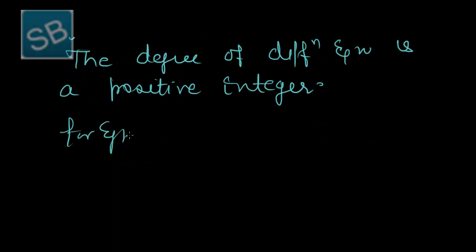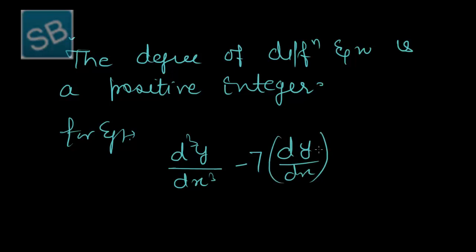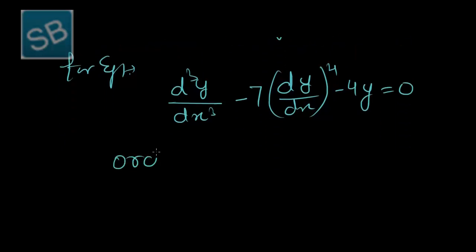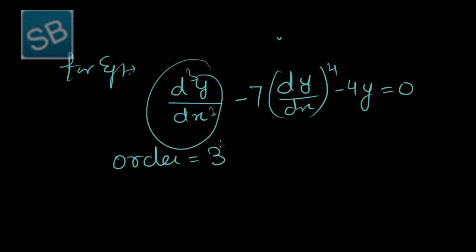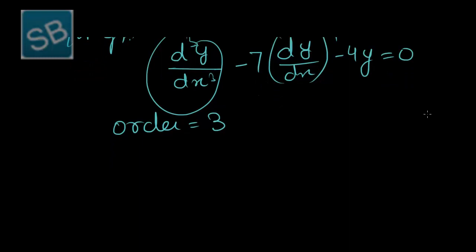For example, we have d³y/dx³ minus 7 times (dy/dx) whole raised to power 4 minus 4y equals 0. The order of this equation is 3 because the highest order derivative is the third derivative. The degree is the power of the highest order derivative existing in the given equation, so here the degree is 1 since the third derivative has power 1.